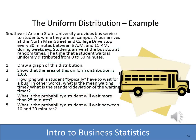Here we have an example of a waiting time uniformly distributed between 0 and 30 minutes. We're going to graph the distribution, prove that the area under it equals 1 or 100%, find the mean or expected waiting time, find the standard deviation, and then determine the probability of a student waiting more than 25 minutes and between 10 and 20 minutes.